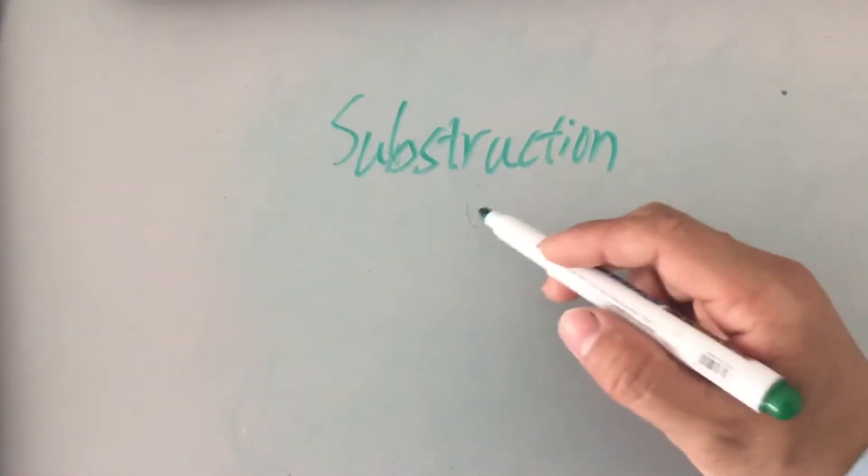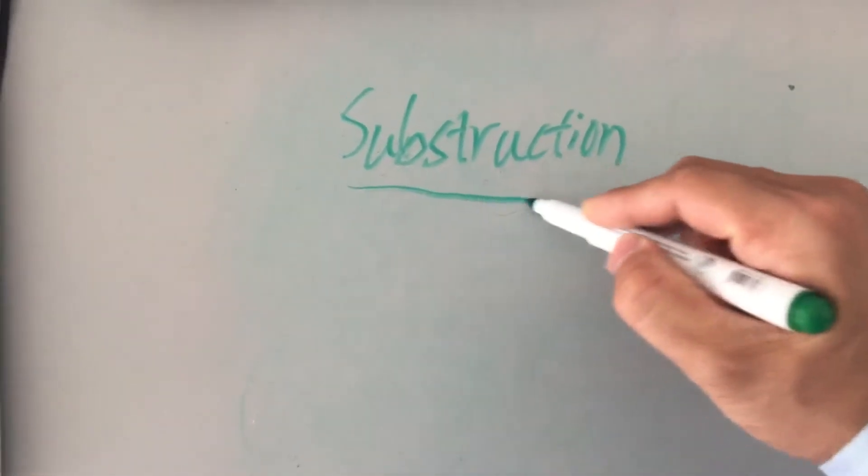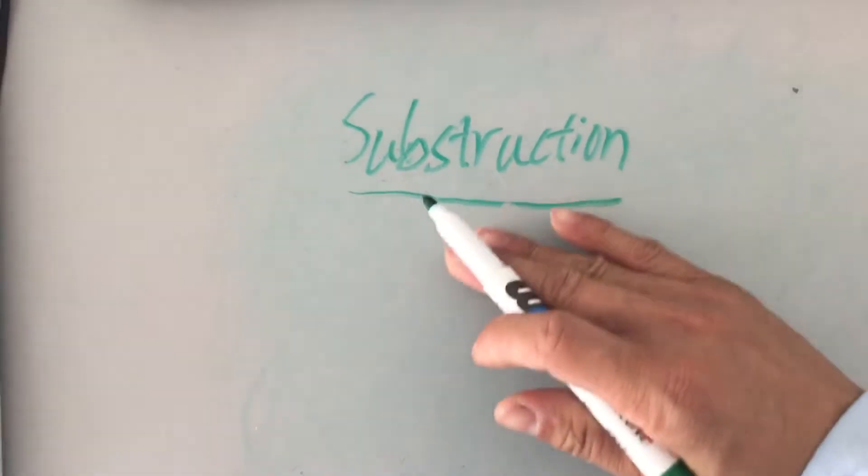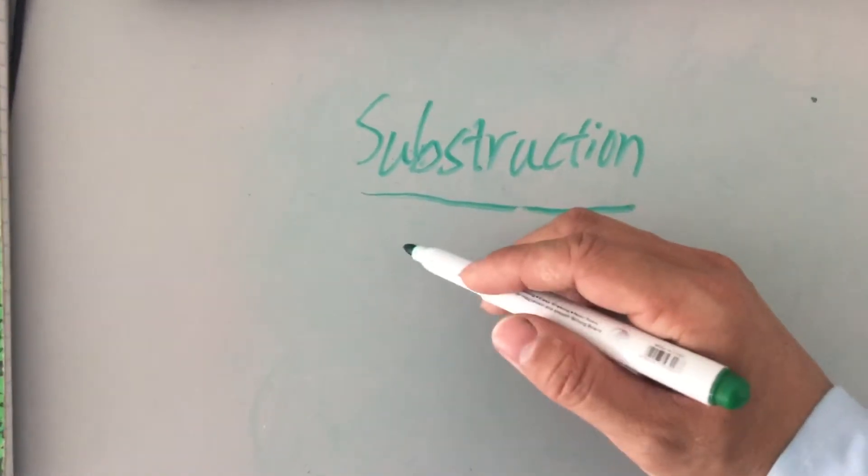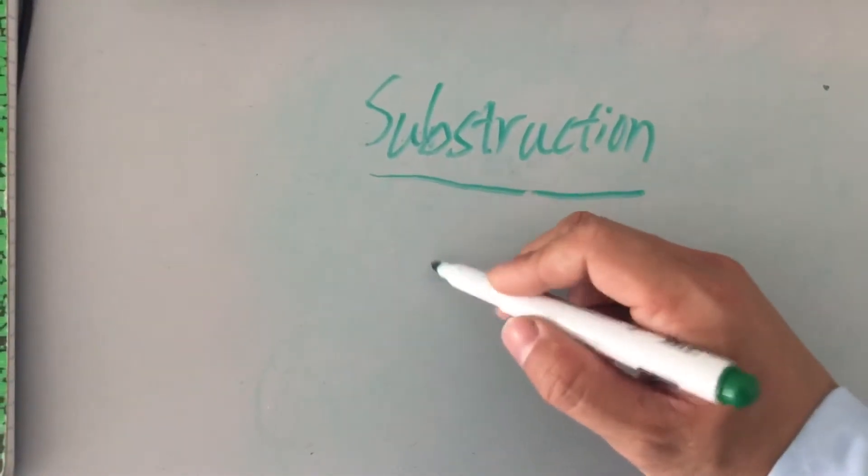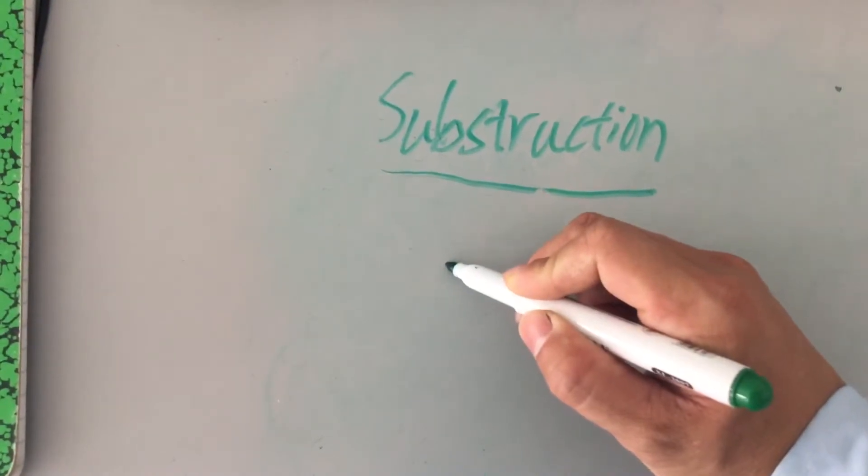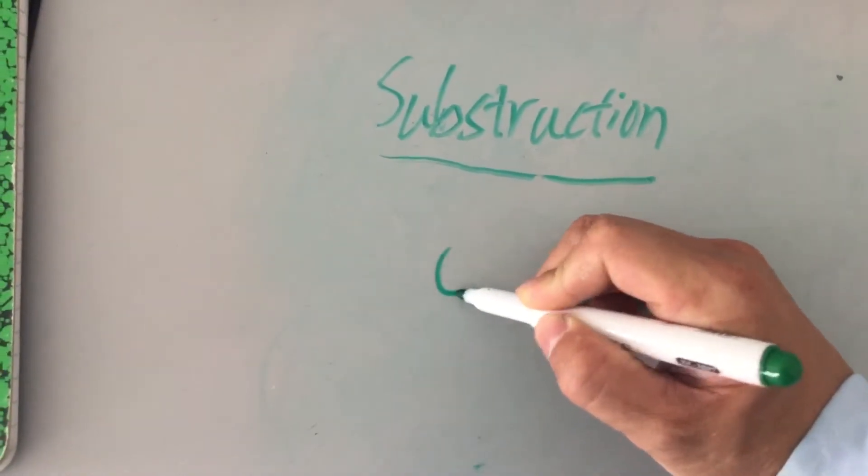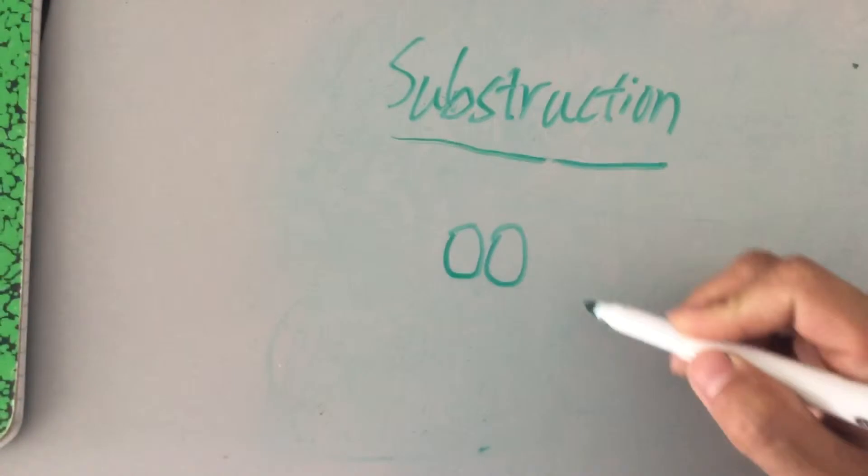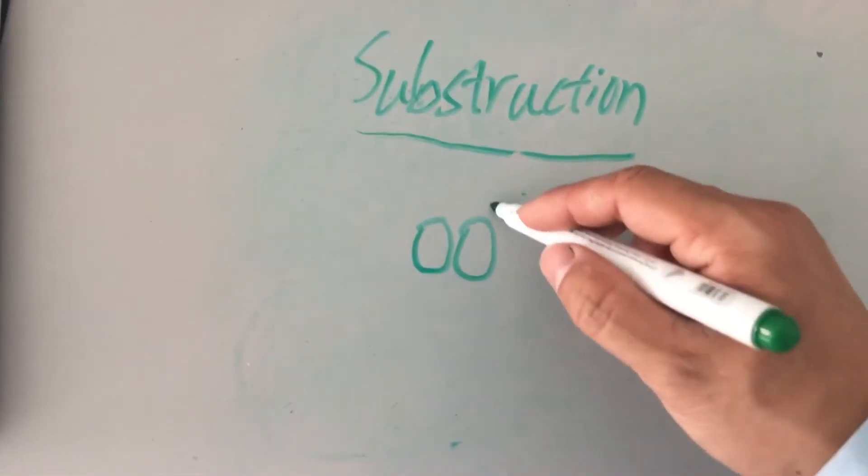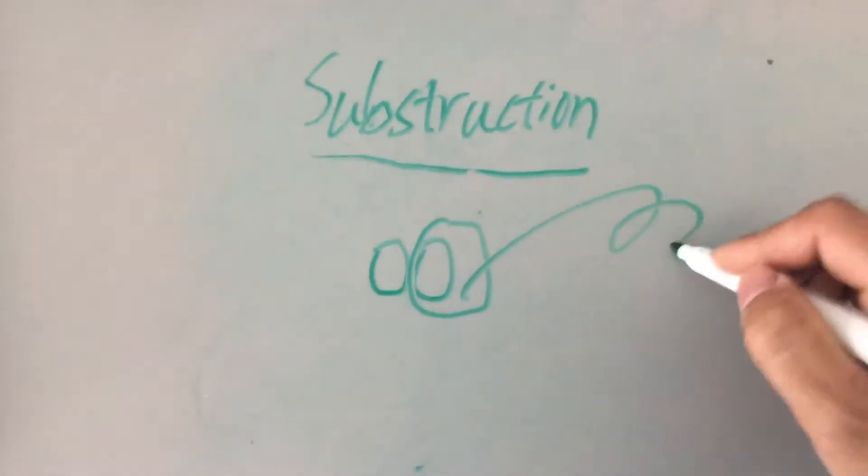Hi guys, today we learn subtraction. Subtraction is like take away. I got two circles. Subtraction means I take up one.